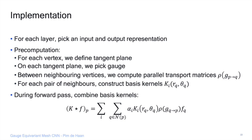To build these layers: for each layer we pick an input and output representation. In a pre-computation phase, we define tangent planes for each point, pick a random gauge at each tangent plane (it doesn't matter), compute parallel transport between points, and for each pair of points solve the kernel constraints evaluated at the relative coordinates. We then have a big contraction where the solutions of the equation are contracted with the learnable alpha parameters — implemented as a single einsum operation, so it's relatively fast.